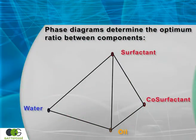A phase diagram is necessary to determine the optimum ratio between the various components. This diagram will determine the different phases that are created when these excipients are combined in different ratios.